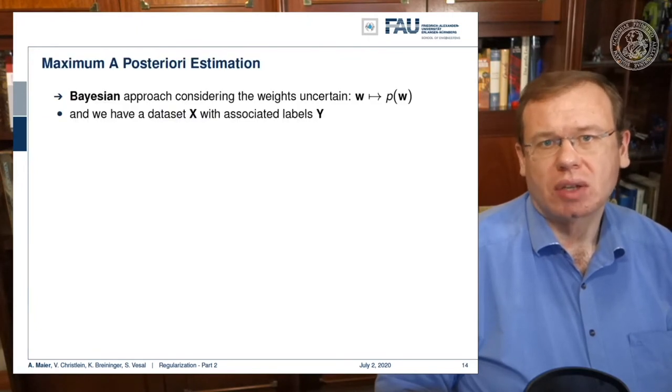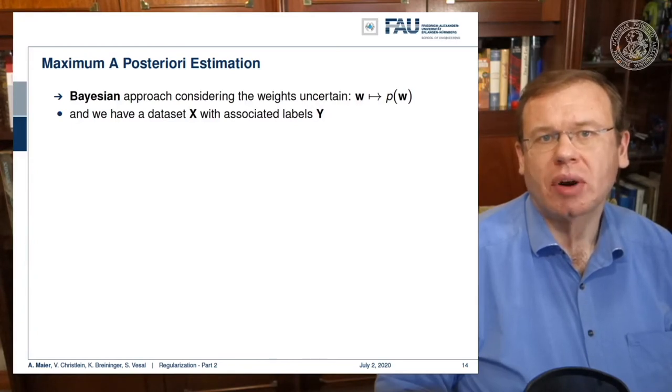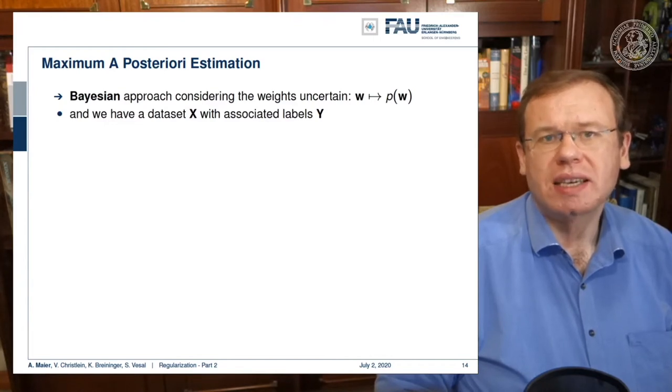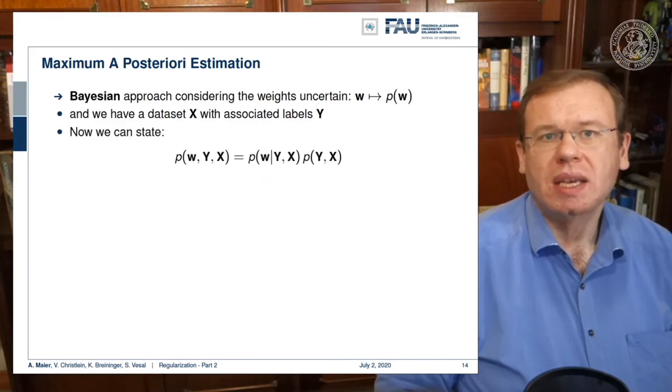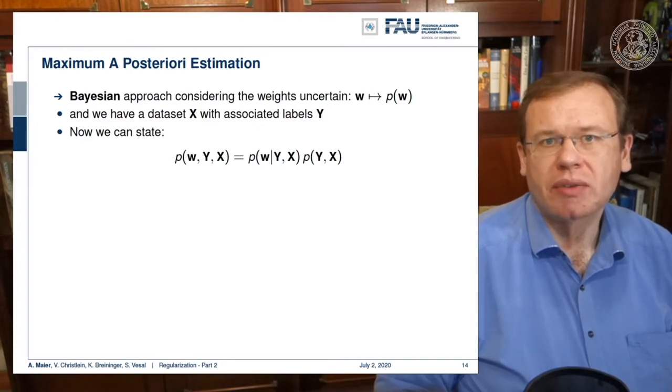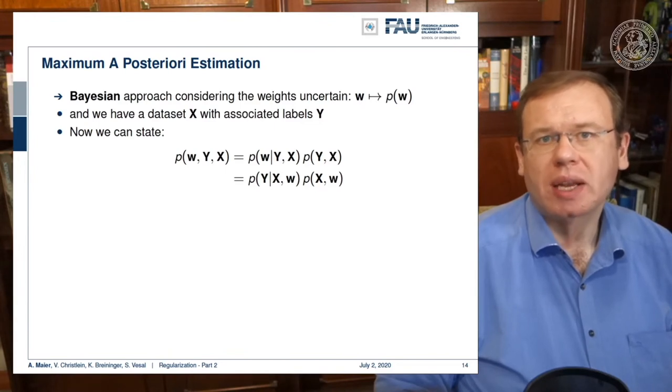We can regularize the loss functions. This is essentially the so-called maximum a posteriori estimation. We can do this in a Bayesian approach where we want to consider the uncertain weights w. They follow a prior distribution p of w. If you have some data set x with some associated labels y, we can see that the joint probability p of w, x, y is the probability of p w given y and x times the probability of y and x.